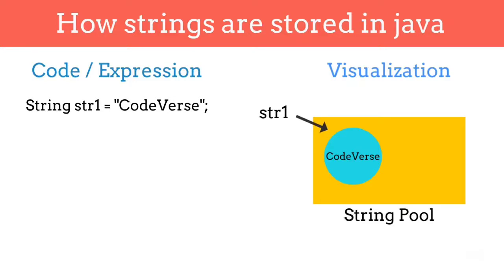So now we want to create another variable with the name str2 and the same value CodeVerse. Then Java won't create another object in the string pool. It will give reference to the same object.